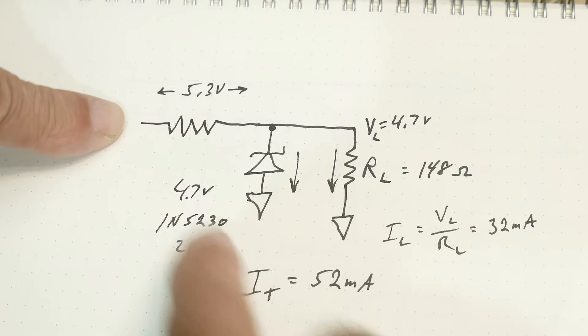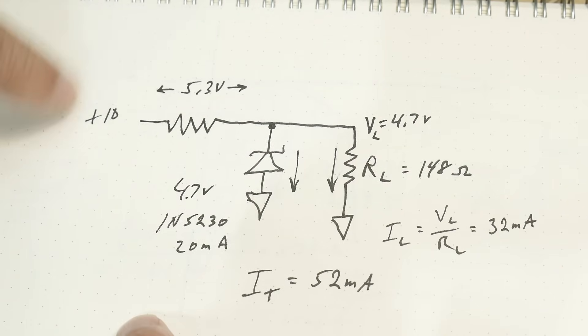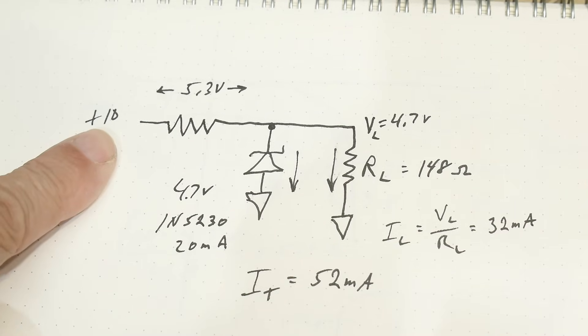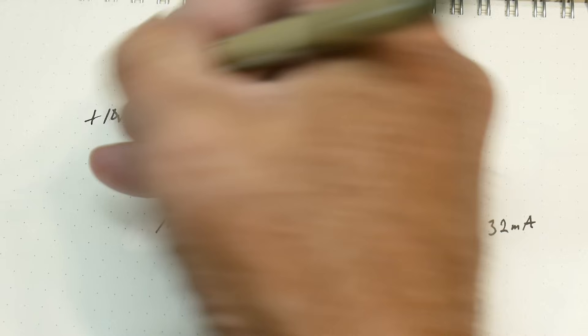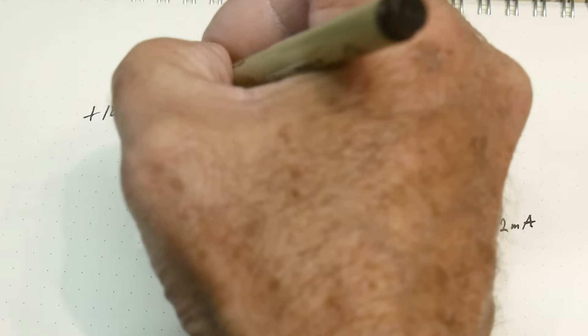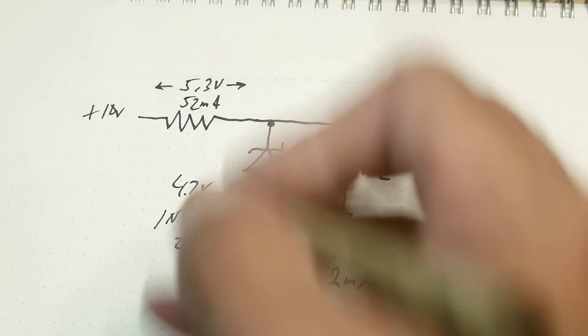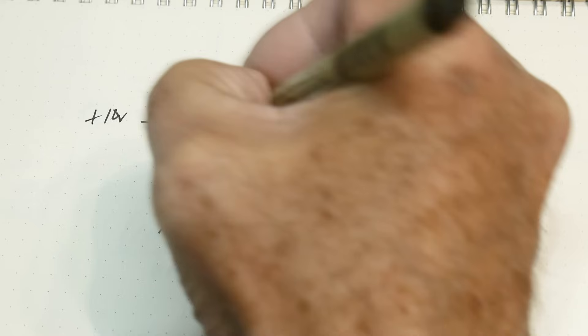Well that 52 milliamps has to go through here. It has to come out of this 10 volt input. So we have 52 milliamps. So we can calculate what size resistor we need. We have 5.3 volts and 52 milliamps. That's 102. Actually, it's 101.9. We need 101.9 ohm resistor.